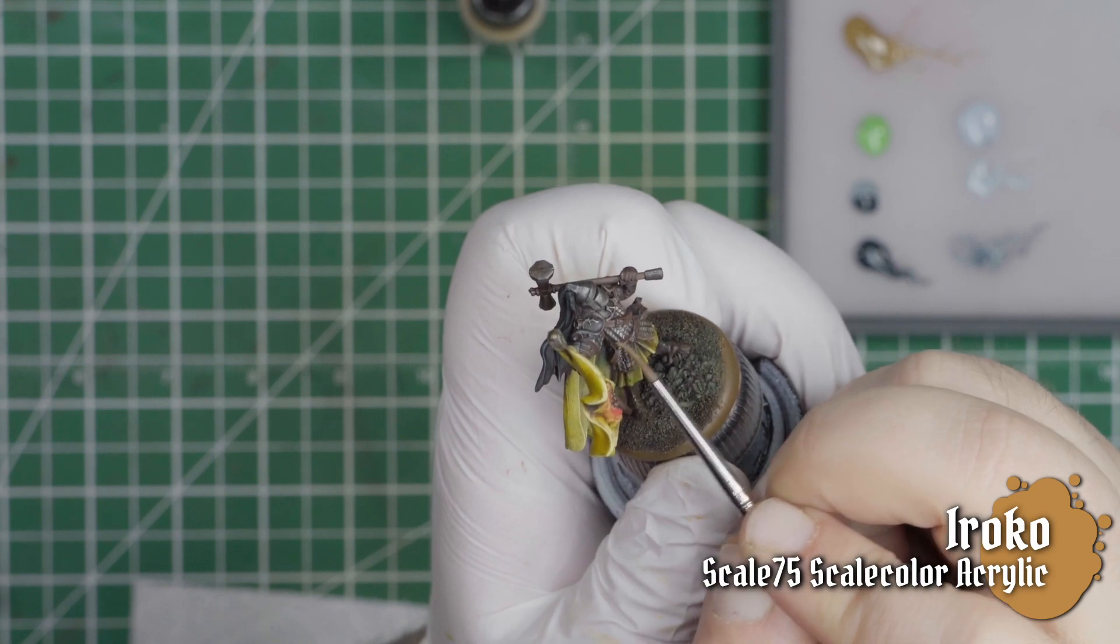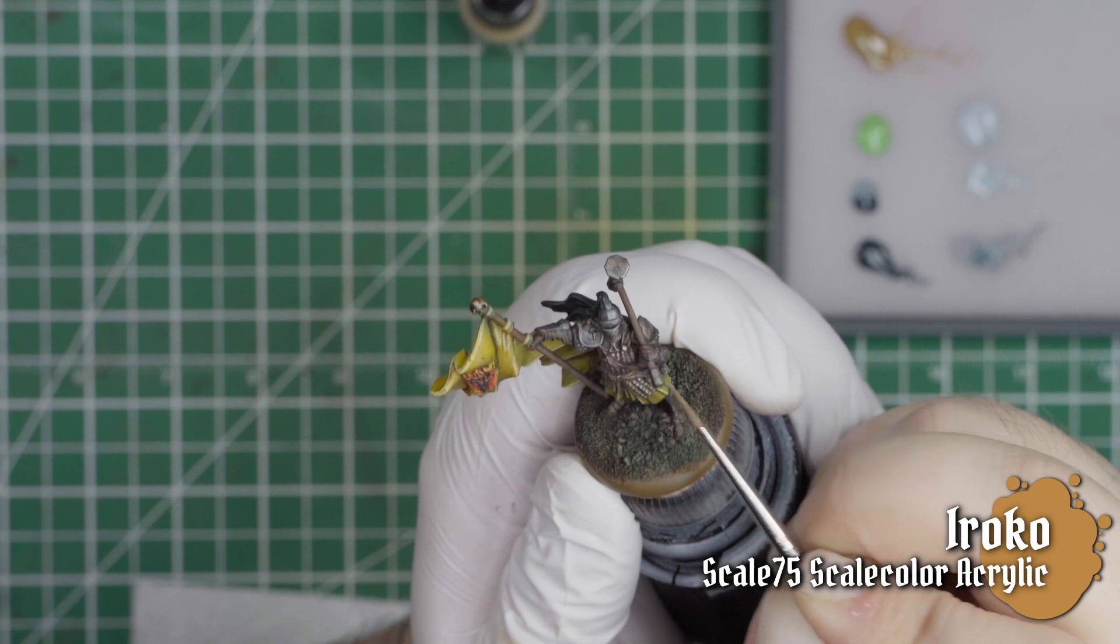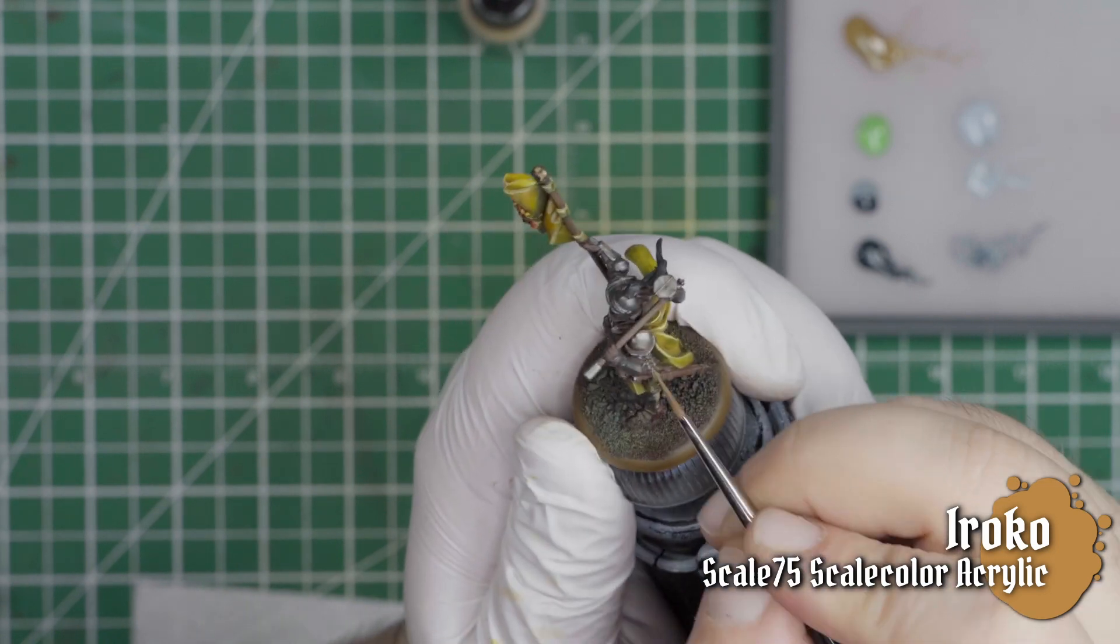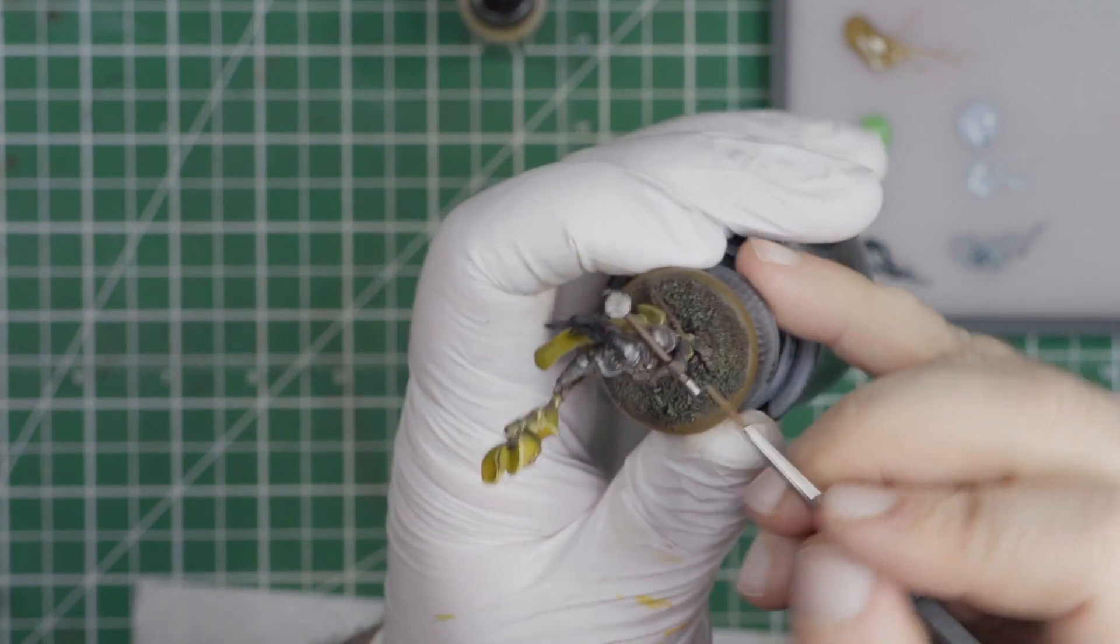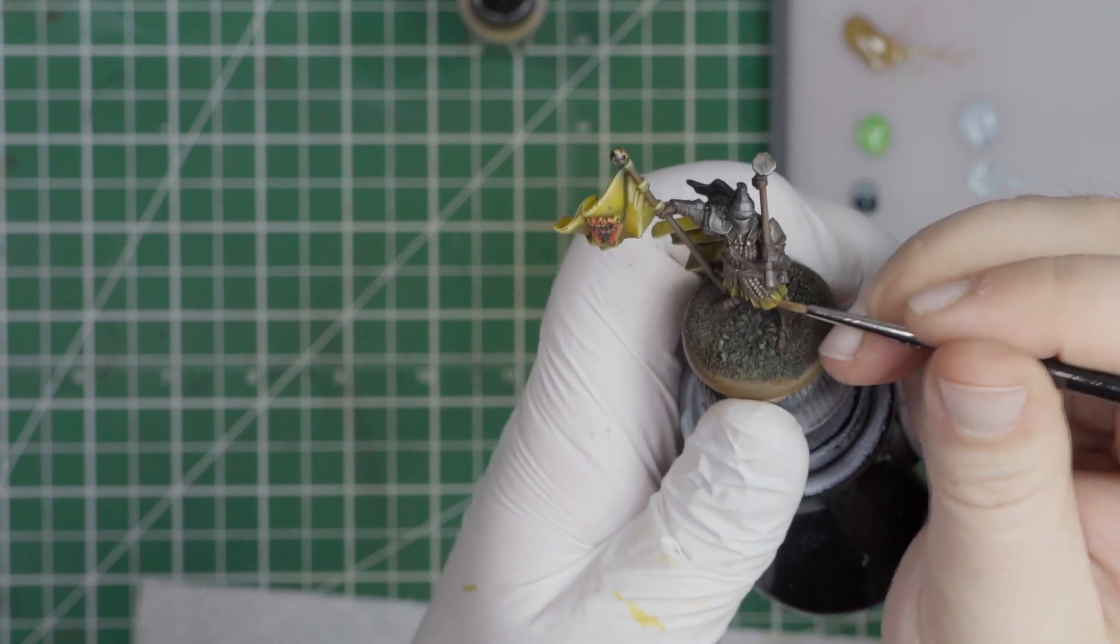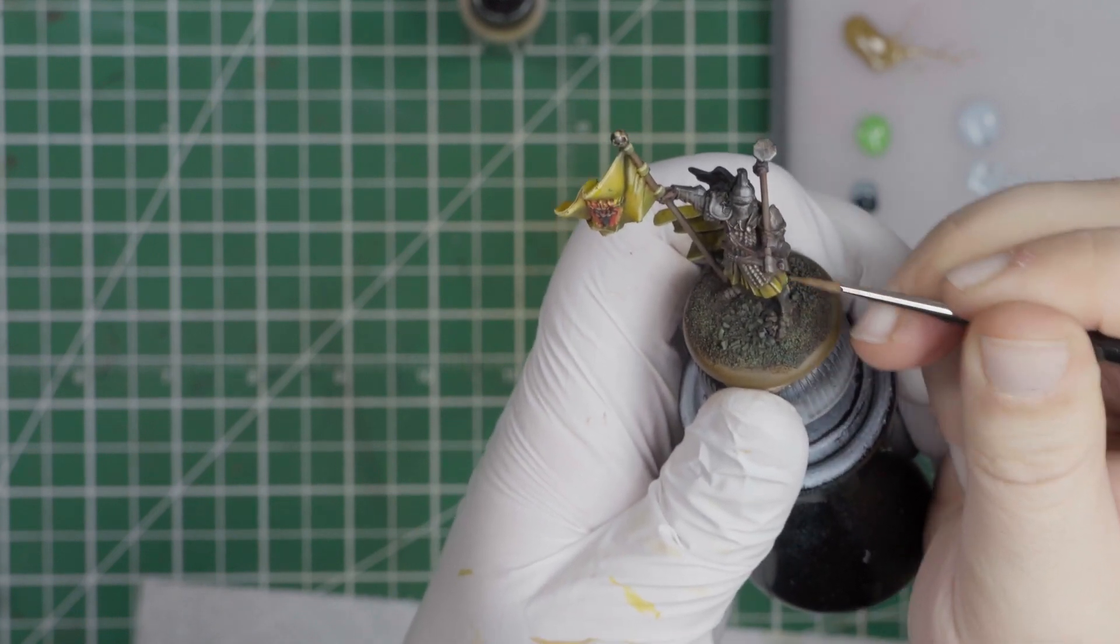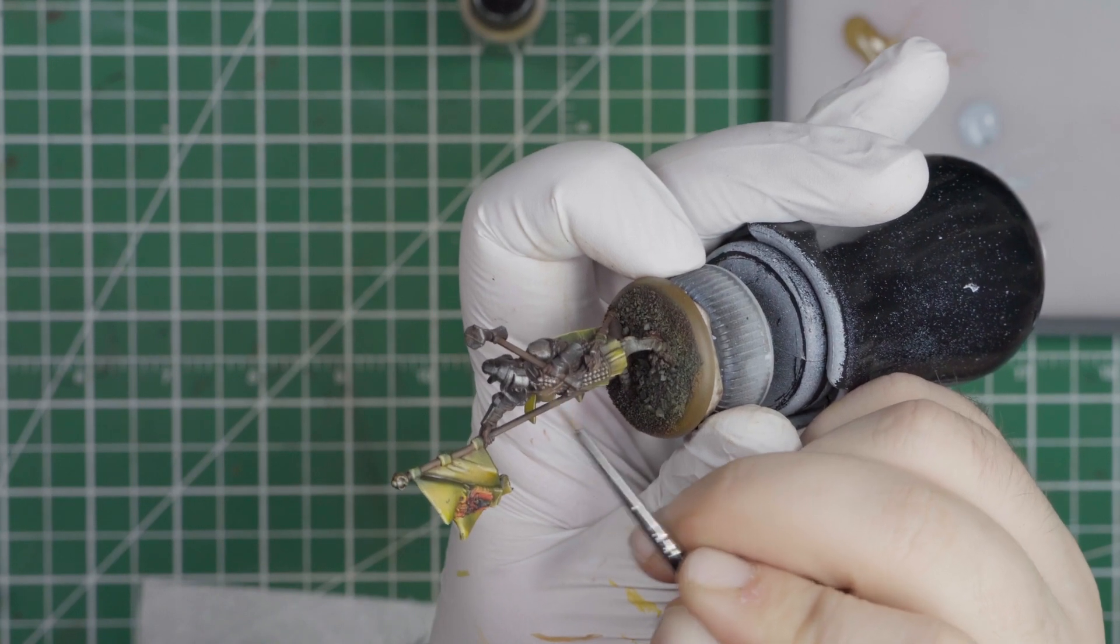On the leather parts of the figures, I went back with Scale 75 Iroko and did some really rough, scratchy, textured edge highlights. I wasn't looking for crispness here. I wanted this stuff to look like worn, used harness. Things that had seen a fight or two, you know what I mean? And Iroko just happens to be my favorite color for achieving that look with leather.